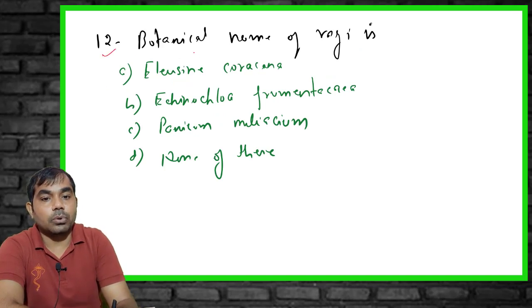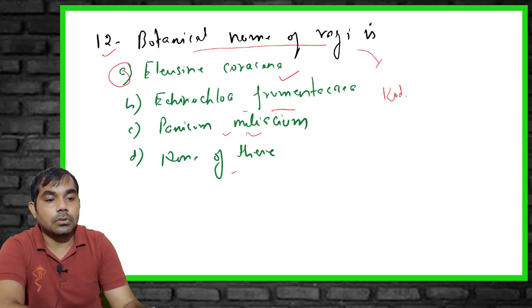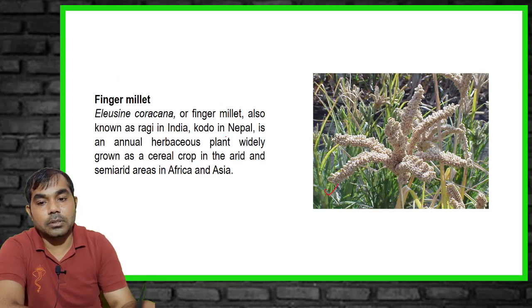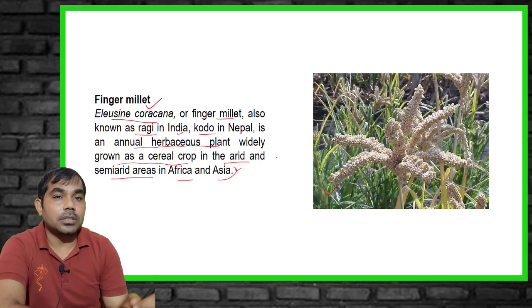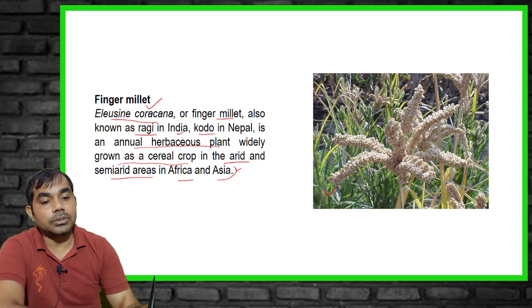The twelfth MCQ: what is the botanical name of Ragi? Options include Eleusine coracana, a kind of clover, Eragrostis ferruginea, and Panicum miliaceum. The right answer is Eleusine coracana. Ragi is also known as kodo in Nepal and finger millet in general. It is an annual herbaceous plant widely grown as a seed crop in arid and semi-arid areas of Africa and Asia.